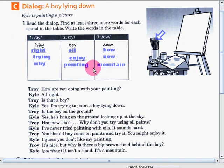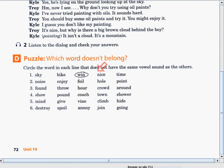Good job guys. You found all the words with I sound, OI, and OW sound. Very good. And now, since we're done with the dialogue, let's try to do the next activity. Puzzle. Which word doesn't belong?